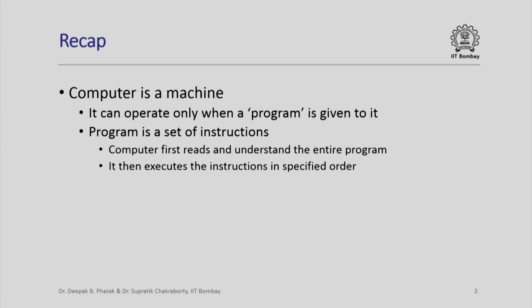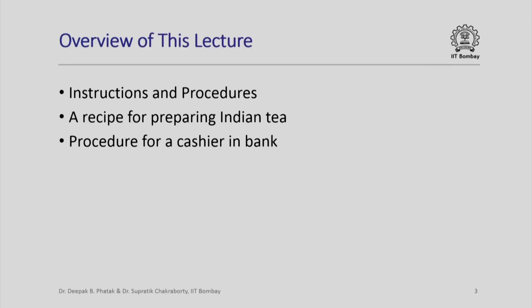Welcome to this introductory session. We already had seen in the preamble that computers are machines, a machine which requires instructions to be given to it. The instructions are given in the form of a program. A computer is expected typically to first read the entire program, understand it, and then execute the instructions one by one in the specified order. In this lecture, we will look at some details of how instructions are given and how procedures are written.